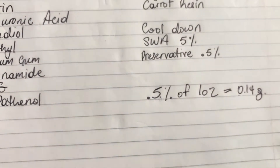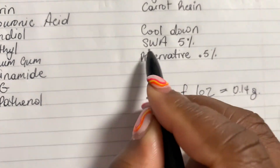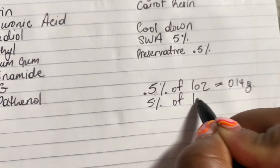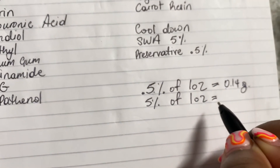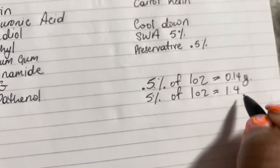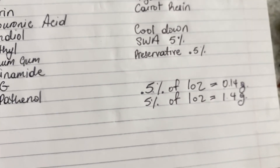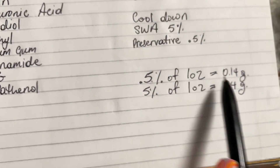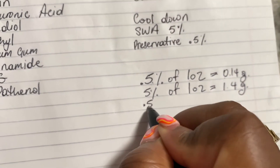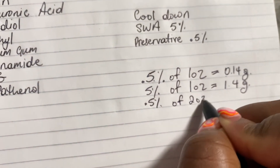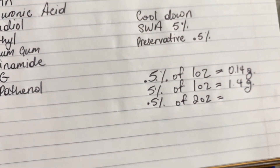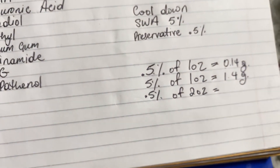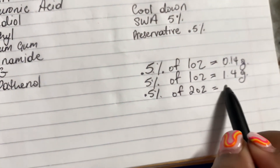You'll do the same process for all your ingredients depending on what the percentage is. We're going to do the SWA, which is five percent — same formula: five percent of one ounce equals 1.4 grams. I already did the math so I know the number. And if you have a two ounce product, you would do the same thing: type 0.5 percent of two ounce into Google, and whatever number it spits out you plug it into your formula.